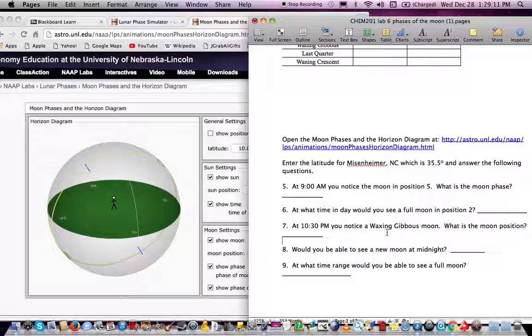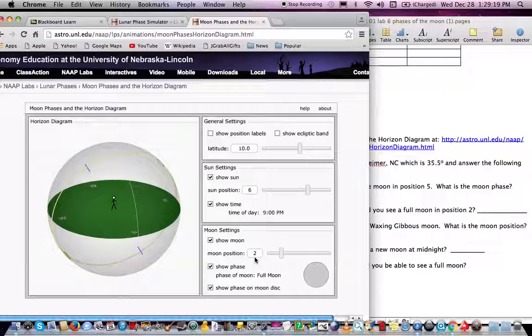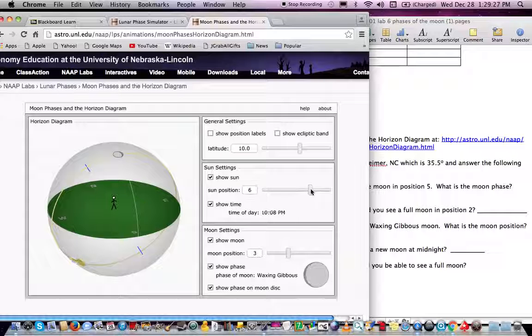It says at 10.30 p.m., you notice a waxing gibbous moon, what is the moon position? So you're going to note the moon position here. I'm going to change this to waxing gibbous, and I'm going to change the time to 10.30 p.m., which I'm going to have to do manually here. And you'll see that the moon is in position 3 at that time, 10.30 p.m. It won't actually be able to set it to 10.30 p.m. It's going to lay somewhere in between 9 and 12, but you can sort of set it in there, and you can get an idea of the moon position that way.